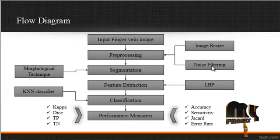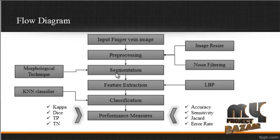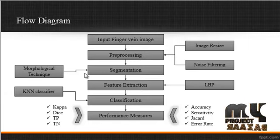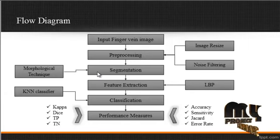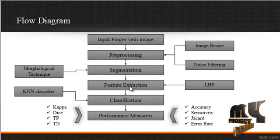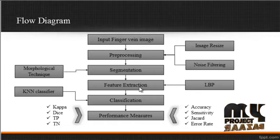After eliminating noise from the image, segmentation is carried out using the morphological technique. After segmentation, the vein region is extracted and background is eliminated. Feature extraction then reduces the image size and extracts key data points from the image.